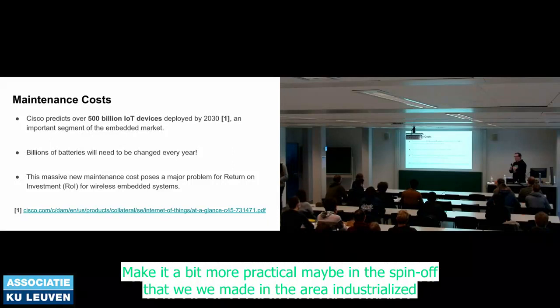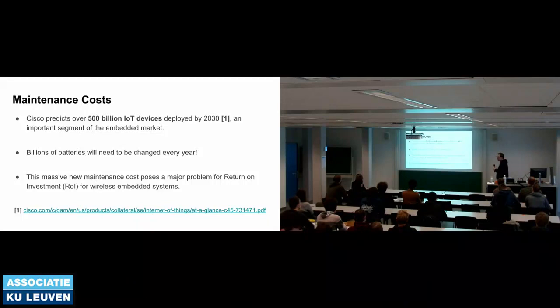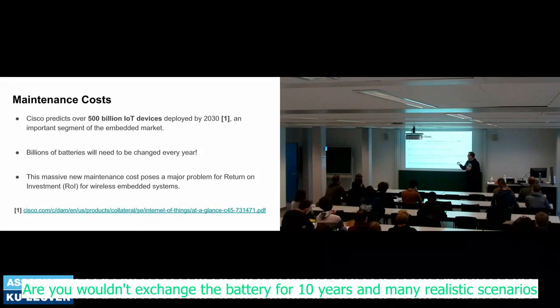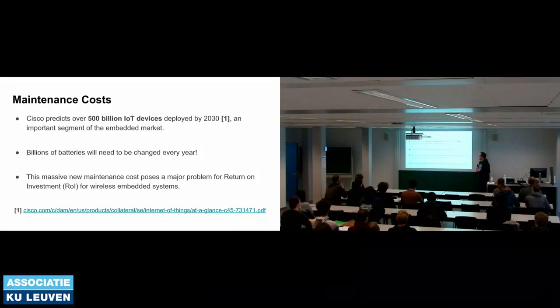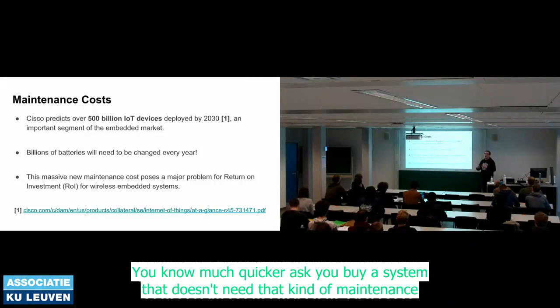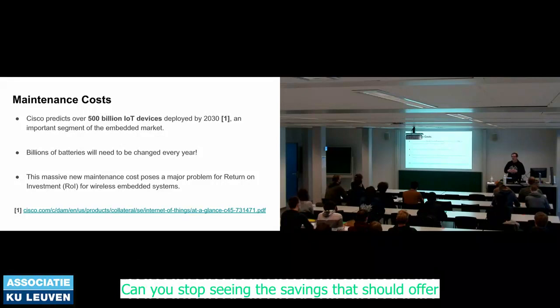To make this practical: in the spin-off we made in industrial IoT from DistriNet, one of the key selling points was that you could take a device with a range of plug-in sensors and not need to change the battery for 10 years in many realistic scenarios. That dramatically reduces maintenance costs and increases return on investment — much quicker after buying a system can you start seeing the savings it offers.